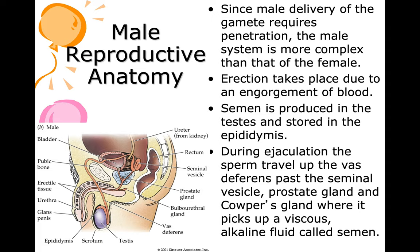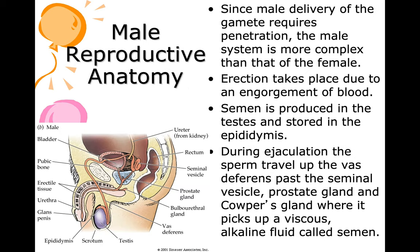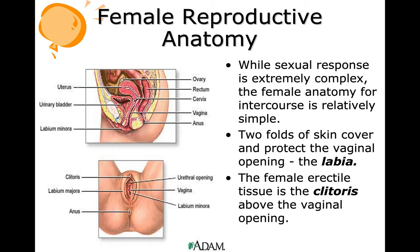Since male delivery of the gamete requires penetration, the male system is more complex. Erection takes place due to engorgement of blood. Semen is produced in the testes and stored in the epididymis. During ejaculation, the sperm travels up the vas deferens past the seminal vesicle, prostate gland, and Cowper's gland, where it picks up a viscous alkaline fluid called semen. The female reproductive area is very acidic to protect itself. When she ovulates, the acidity becomes more neutralized. To further neutralize the acidity so sperm can swim, the male produces an alkaline substrate — semen.